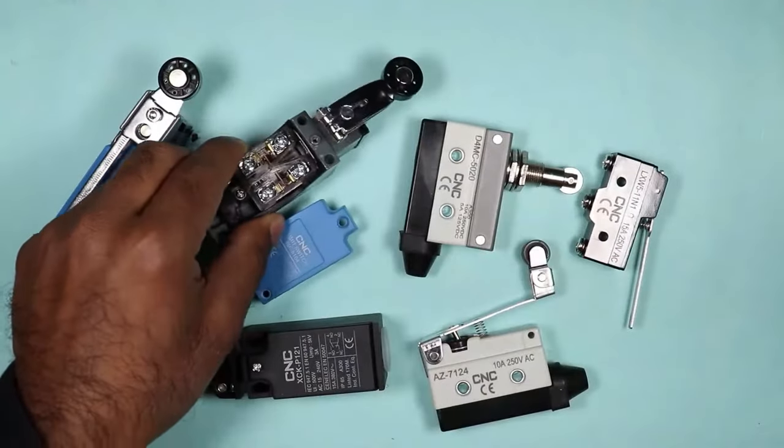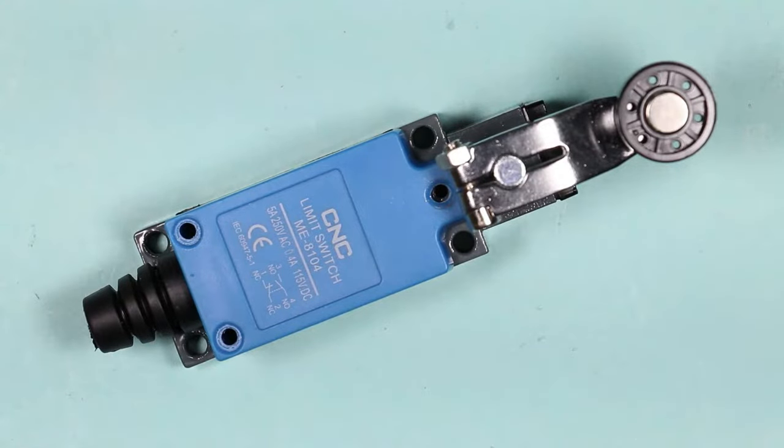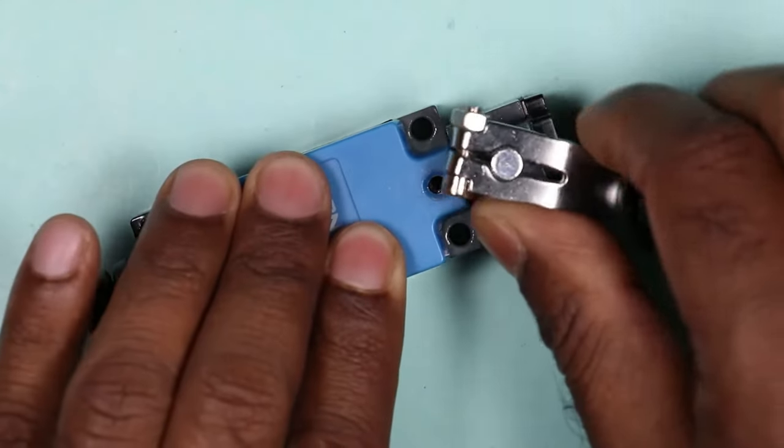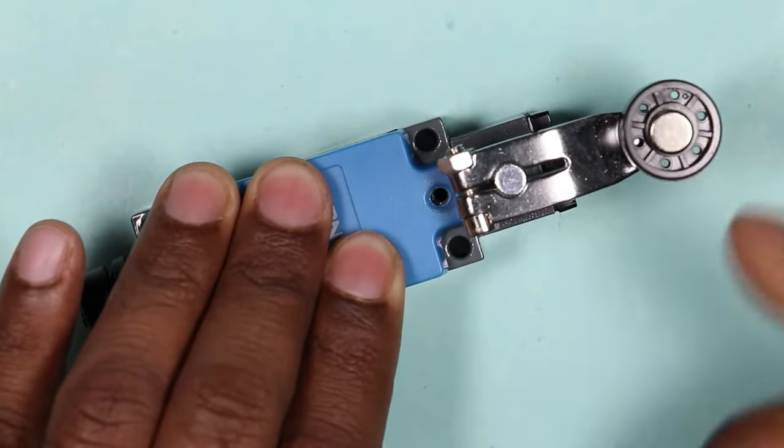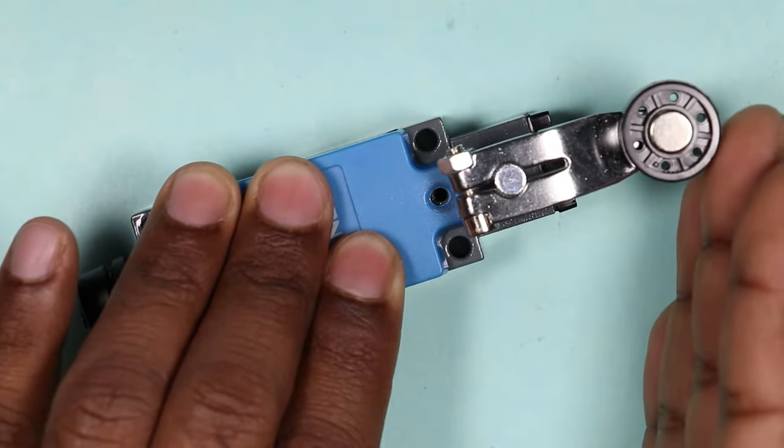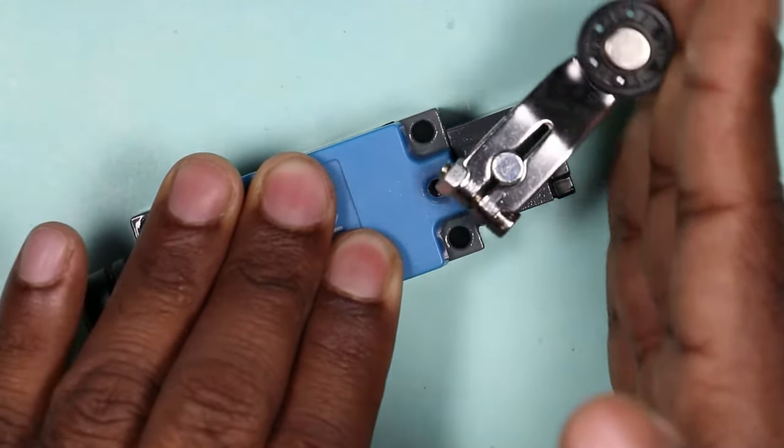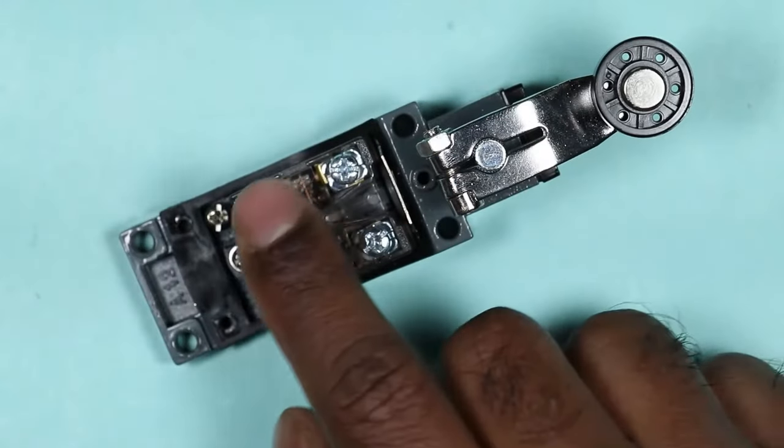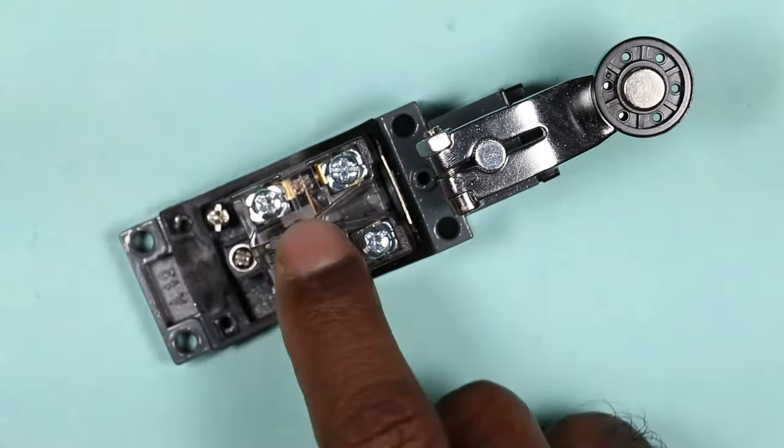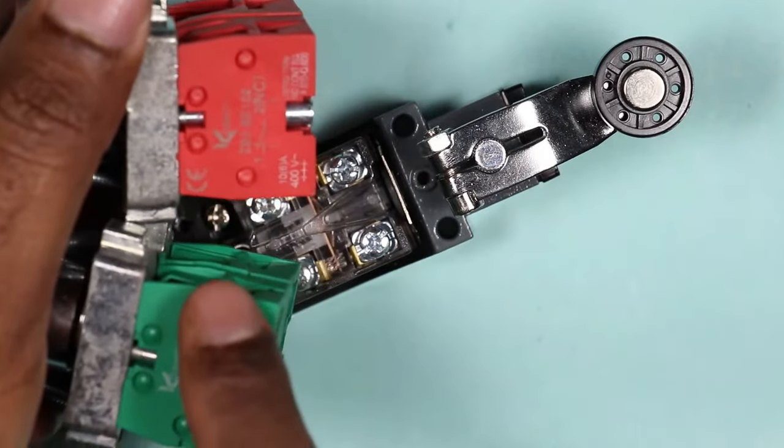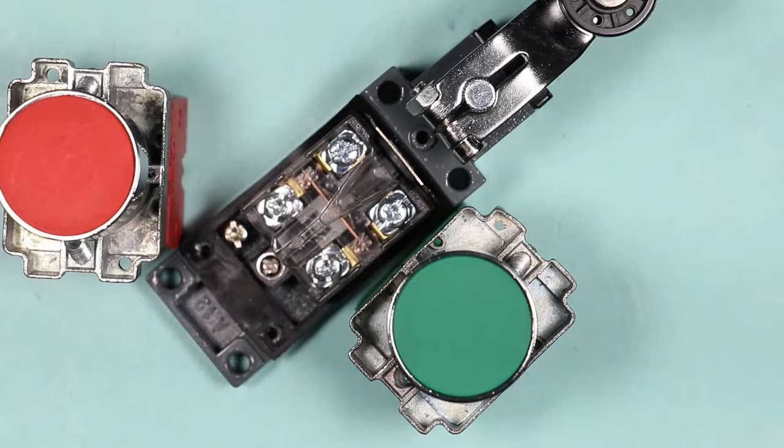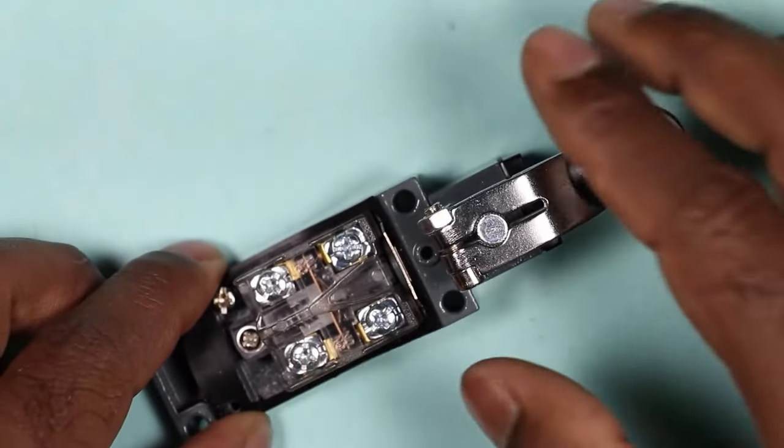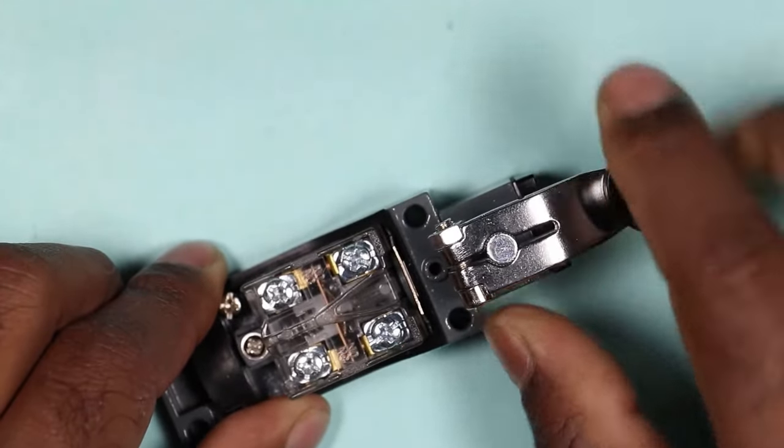Before moving to wiring part, let's understand some basic knowledge of this limit switch. This part in limit switch is known as plunger. On top of plunger, roller is given. This roller contacts with moving part and plunger gets operated. When this plunger operates, then inside the switch, an element is present, which is exactly like NO and NC contact. The way in which push button changes NO and NC contact, in the same way limit switch changes NO and NC contact by movement of plunger.